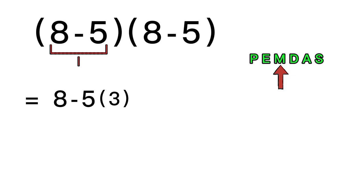Next, multiplication comes before subtraction. So we do 5 times 3, which equals 15. Now we have 8 minus 15. And when we subtract 15 from 8, we get negative 7.